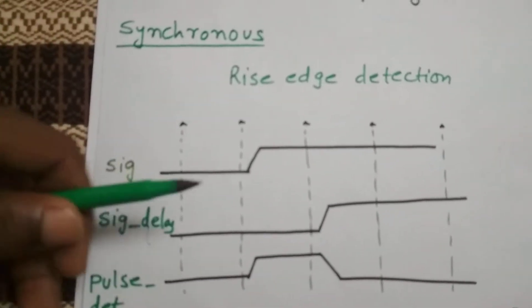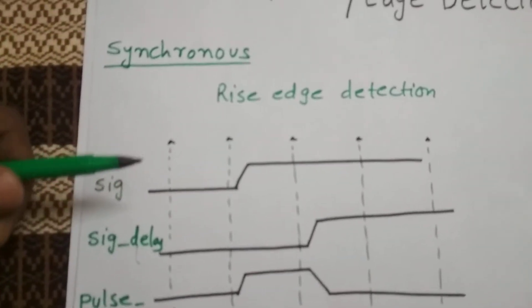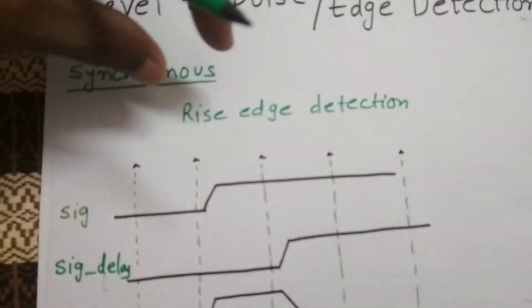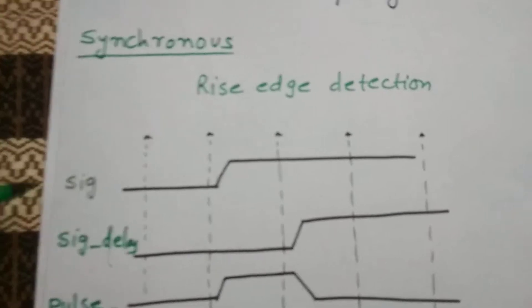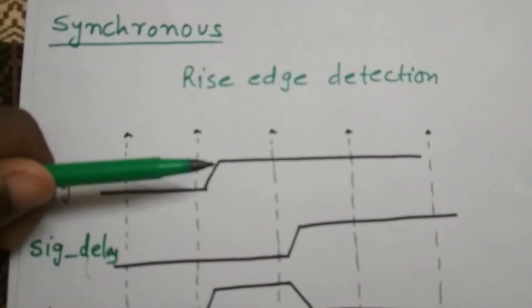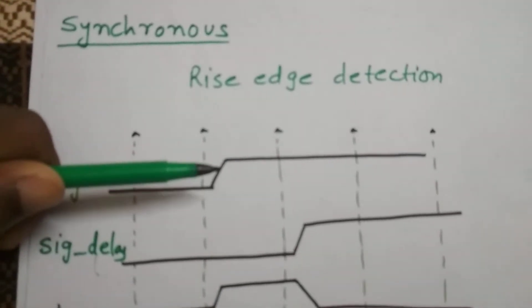This is a signal and this is a level. A level means a signal being high for more than one clock period. So how are we going to detect this rising edge? It's a simple logic.